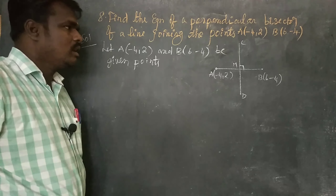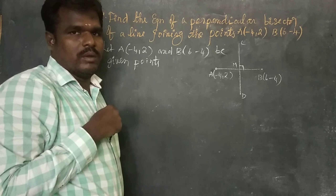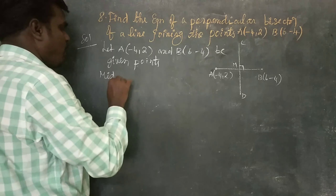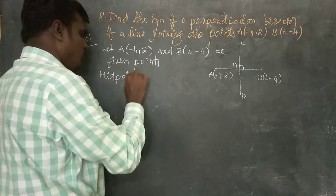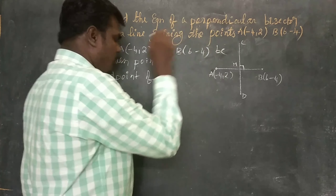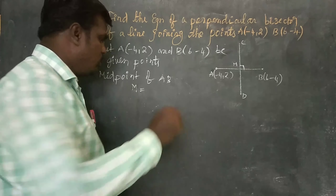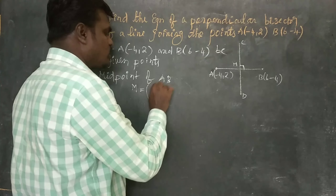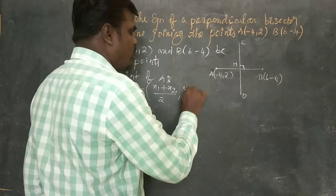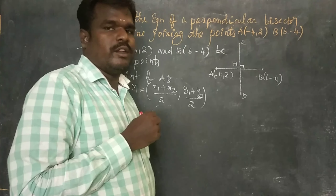First, we find the midpoint of AB. Using the midpoint formula: M = (x1 + x2)/2, (y1 + y2)/2.